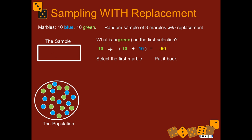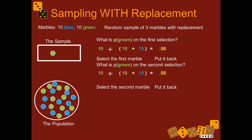You put the selected marble back in the population after recording it. We got a green one; we write it down and put it back. For the second selection, what's the probability of getting a green one? It's the same — there are still ten green ones and ten blue ones, so the probability of green is 10 divided by 20 which is 0.5. We select the second marble, get another green one, and put it back. Now what's the probability of getting a green one on the third selection?